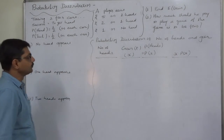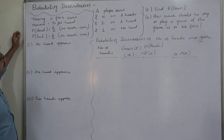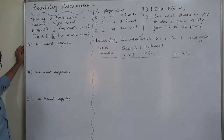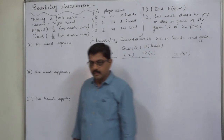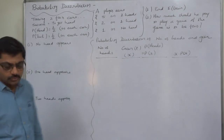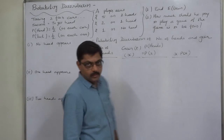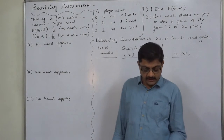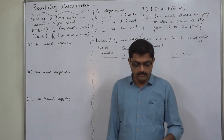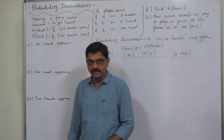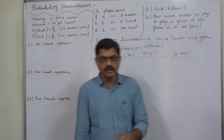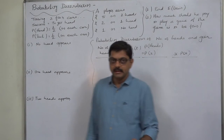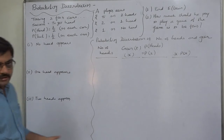Two coins are tossed and the number of heads is the target event — success is to get a head. Two coins are tossed, so there will be three possible outcomes: no head on any coin (tail appears on both), head on any one coin (first or second), and head on both coins.